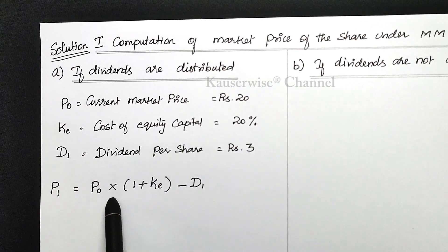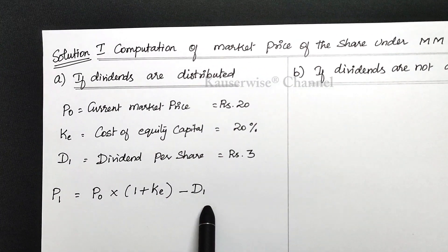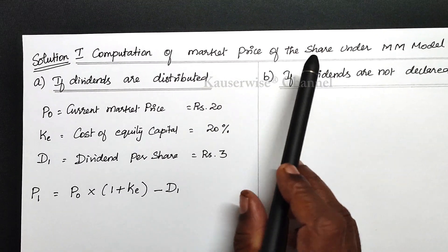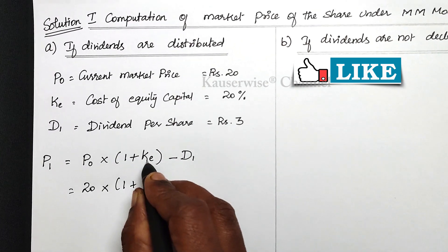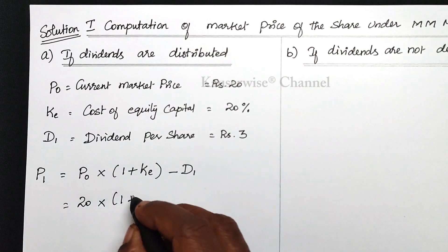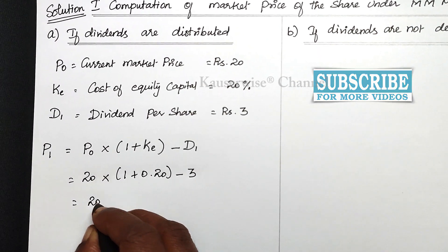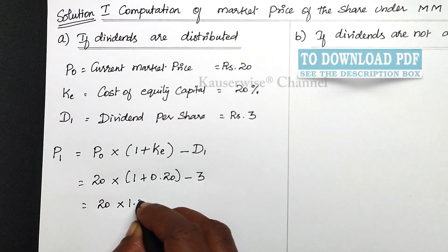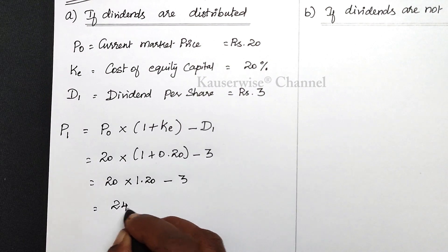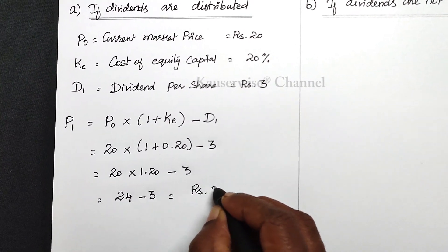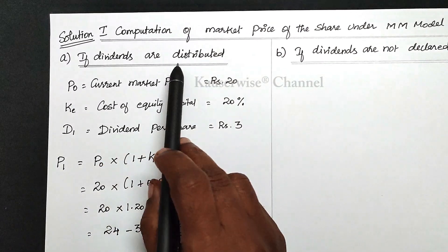The formula is P1 = P0 × (1 + KE) − D1. Substituting the values: 20 × (1 + 0.20) − 3 = 20 × 1.20 − 3 = 24 − 3 = rupees 21. So rupees 21 is the market price per share at the end of the year under the MM approach if dividends are distributed.